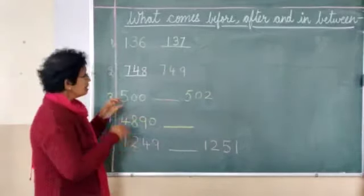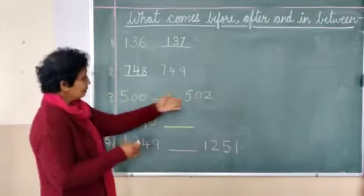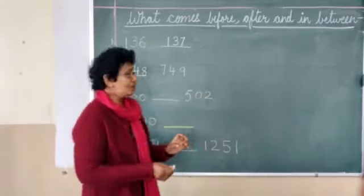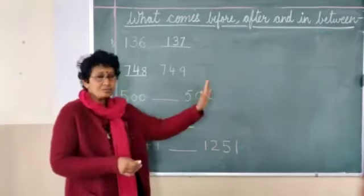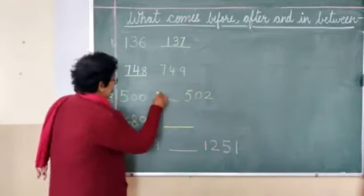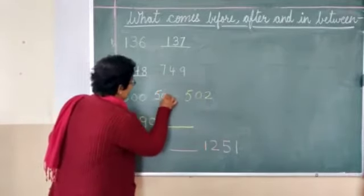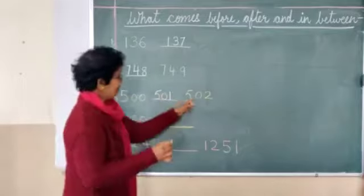Now next one is in between: 500 and 502. Which number will come? Again go forward. So after 500, the next number is 501. Then after that, 502.